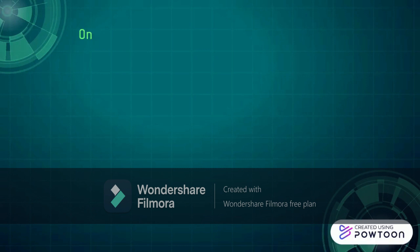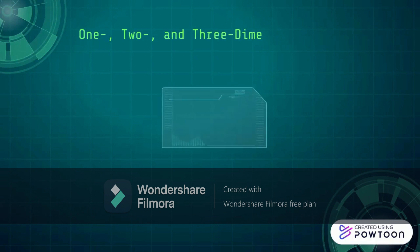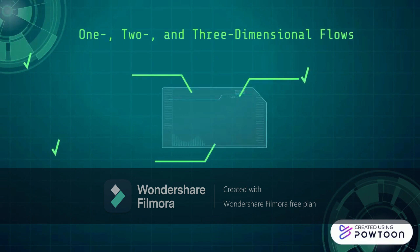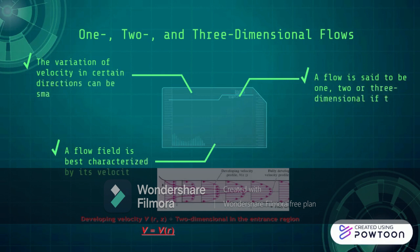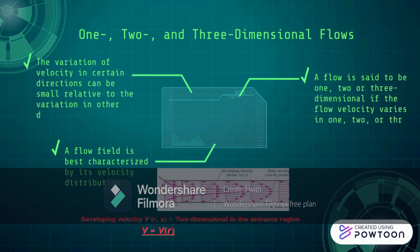The next point is one, two, and three-dimensional flows. A flow is said to be one, two, or three-dimensional if the flow velocity varies in one, two, or three dimensions respectively. The variation of velocity in certain directions can be small relative to the variation in other directions and can be ignored. A flow field is best characterized by its velocity distribution. For the development of the velocity profile in a circular pipe, V = V(r, z), and thus the flow is two-dimensional in the entrance region, and becomes one-dimensional downstream when the velocity profile fully develops and remains unchanged in the flow direction.